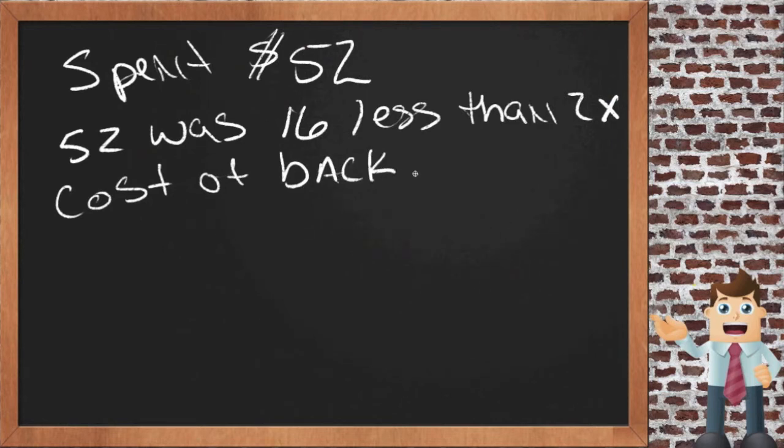Always the best thing to do is to rewrite the information you're given like I'm doing here and make sure you're interpreting it clearly. Write it down in a way that makes sense to you and then go back and see if it still reflects what you've been told. So I'm thinking that you spent $52 and that the $52 you spent was $16 less than twice what you spent on the backpack. Yeah, that seems to match what you told me here.